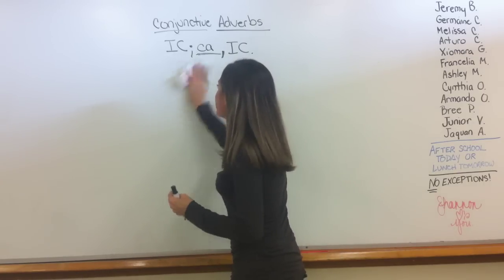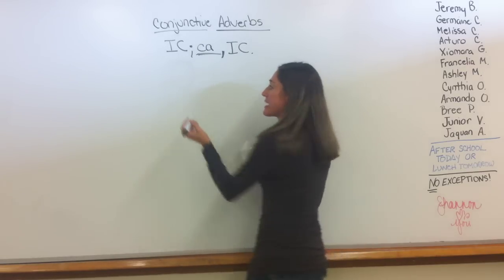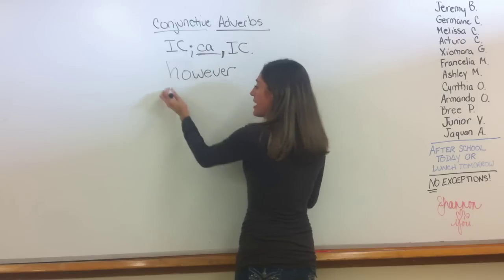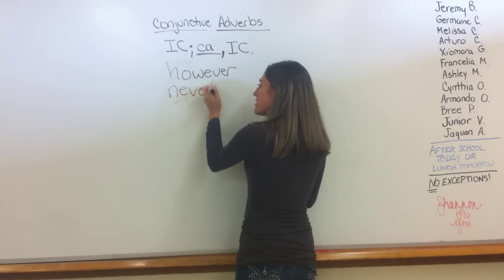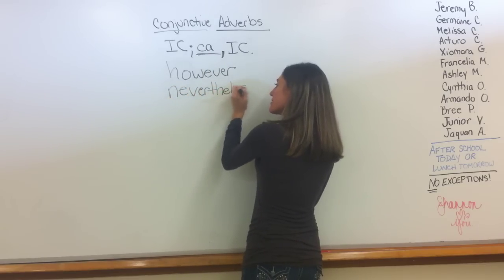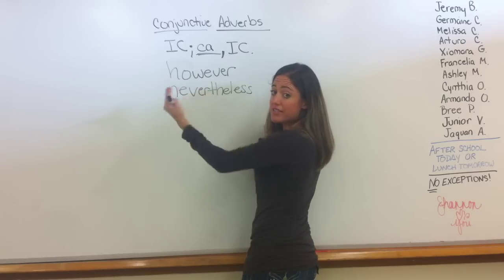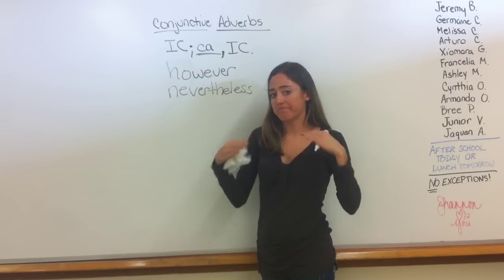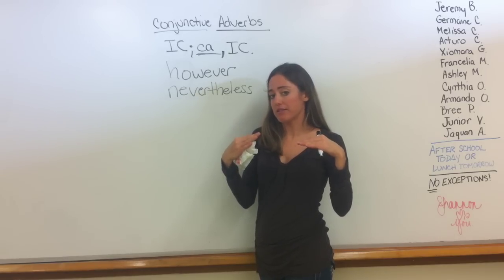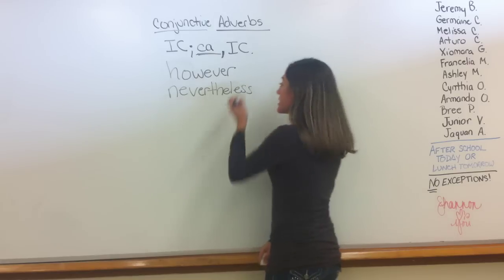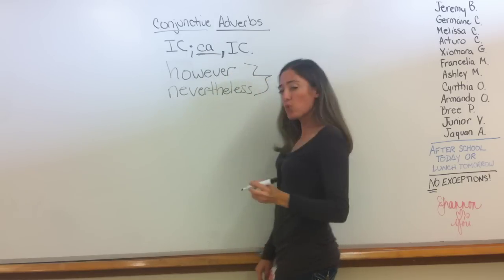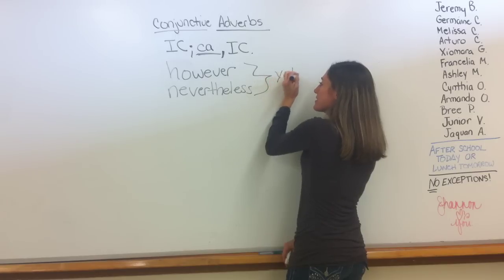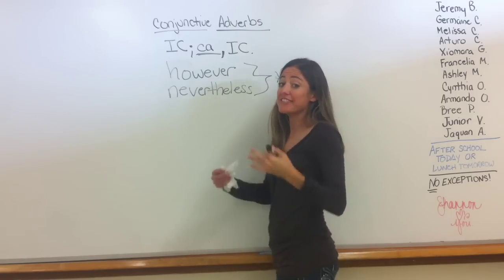Here are your two that we're going to discuss today: however and nevertheless. Never-the-less — all one word, smushed together: nevertheless. However, nevertheless. These two words show contrast between two independent clauses. The best word to show the equivalency would be 'yet,' probably. It means even still.